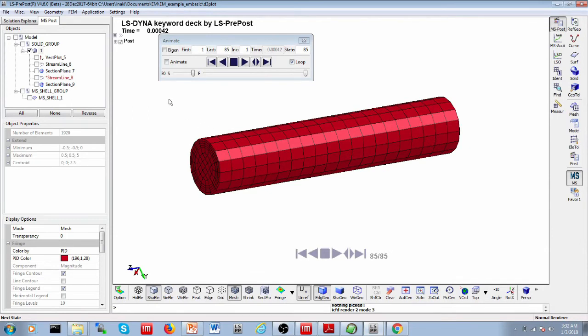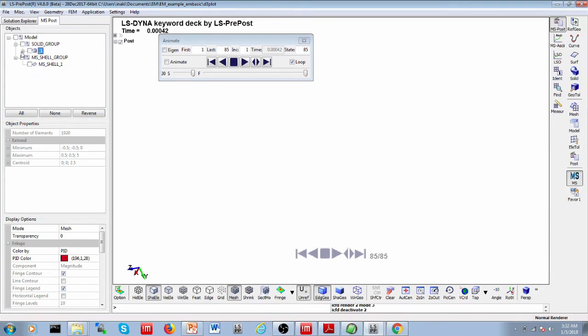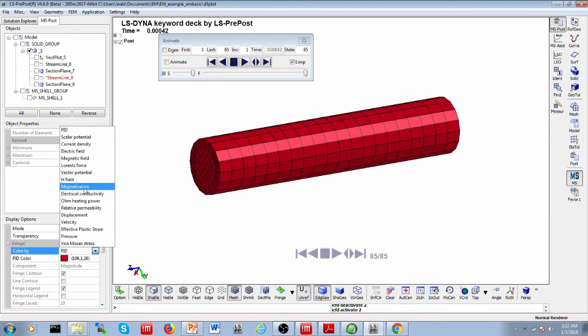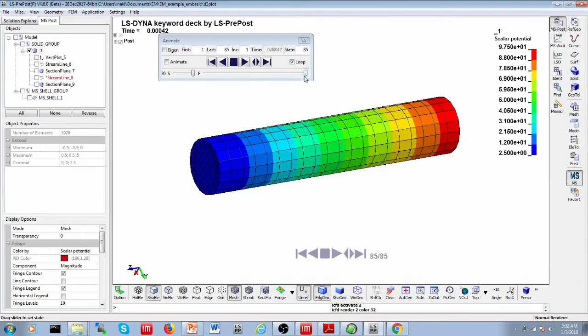If you open this file then with LS-POST, the D3 plot, you will see here in the LS-POST GUI, you will see that we have our solid, our rod, on which you can display electromagnetic quantities. For example, the scalar potential here. So you see that we do have a gradient between our plus and minus sign. We have successfully imposed our voltage.